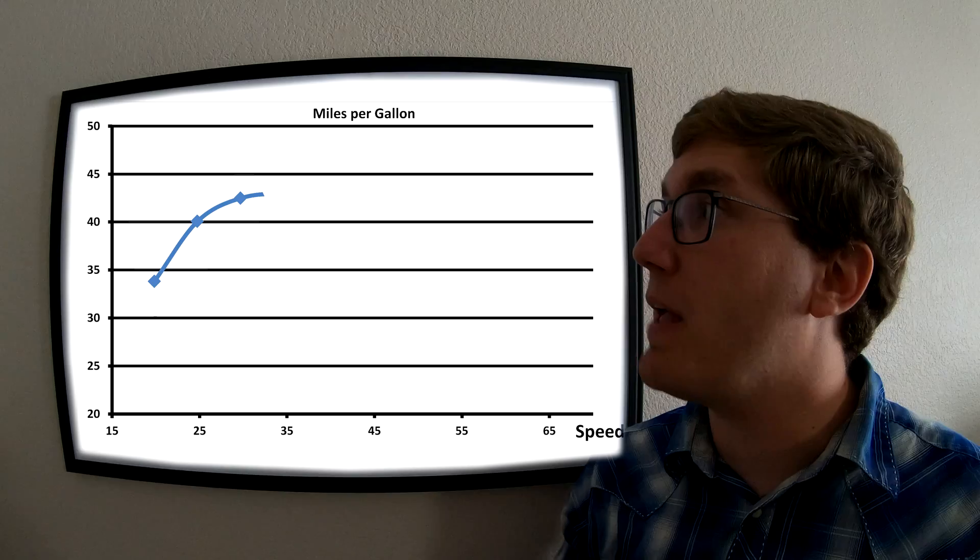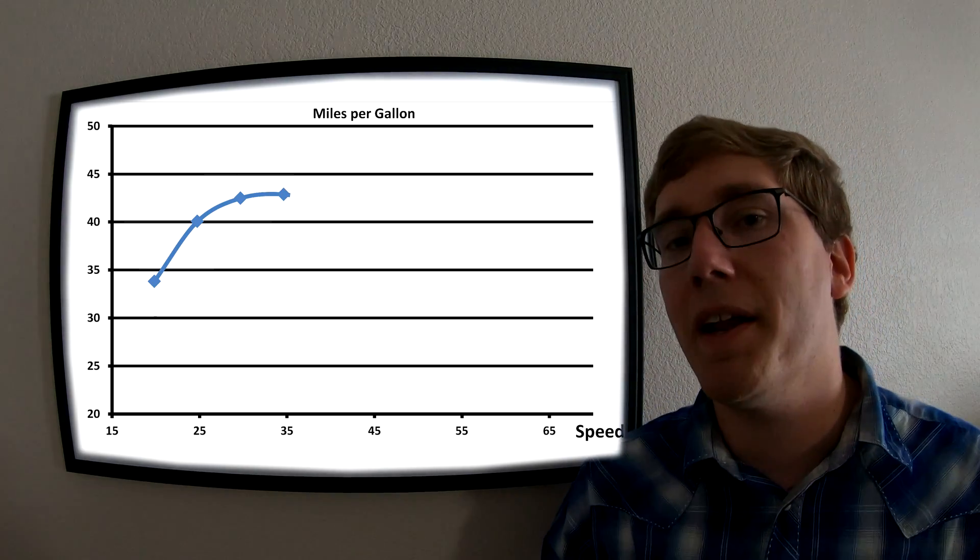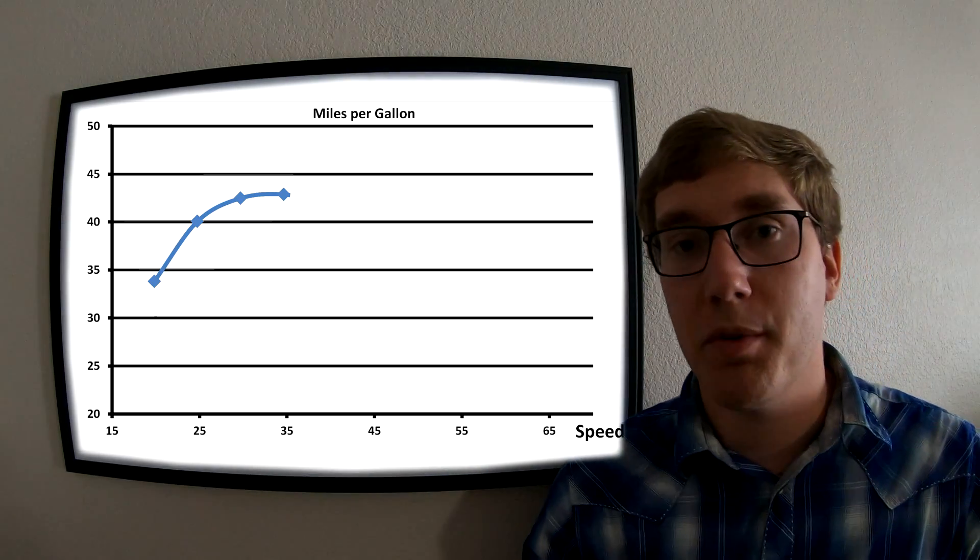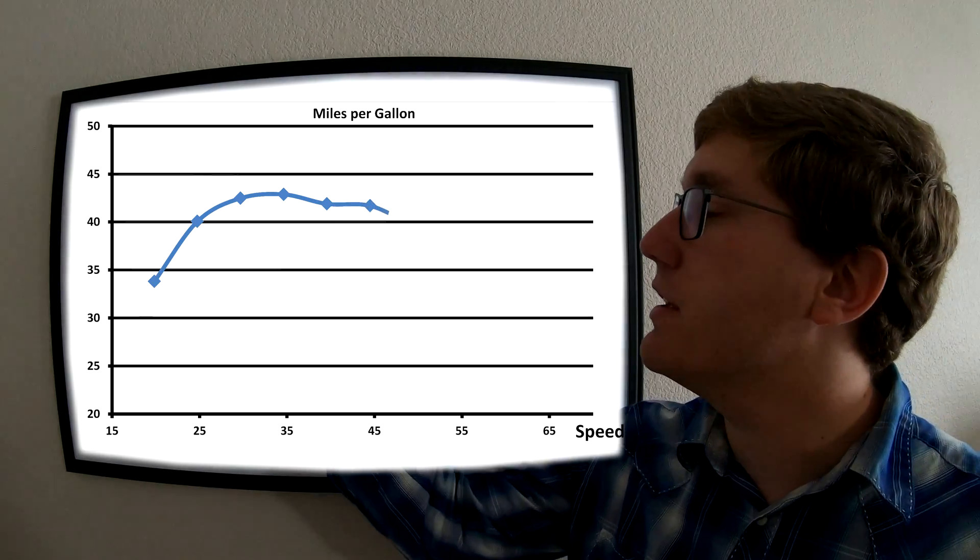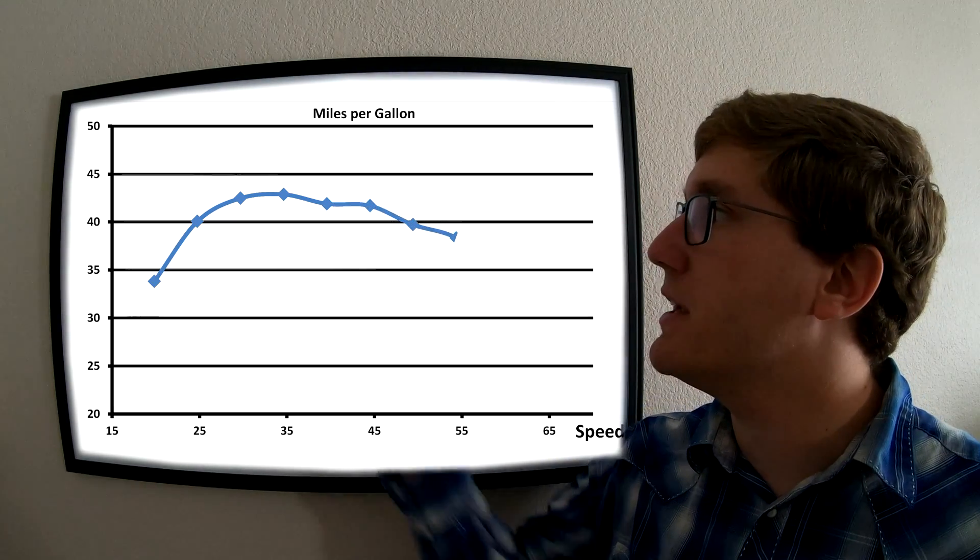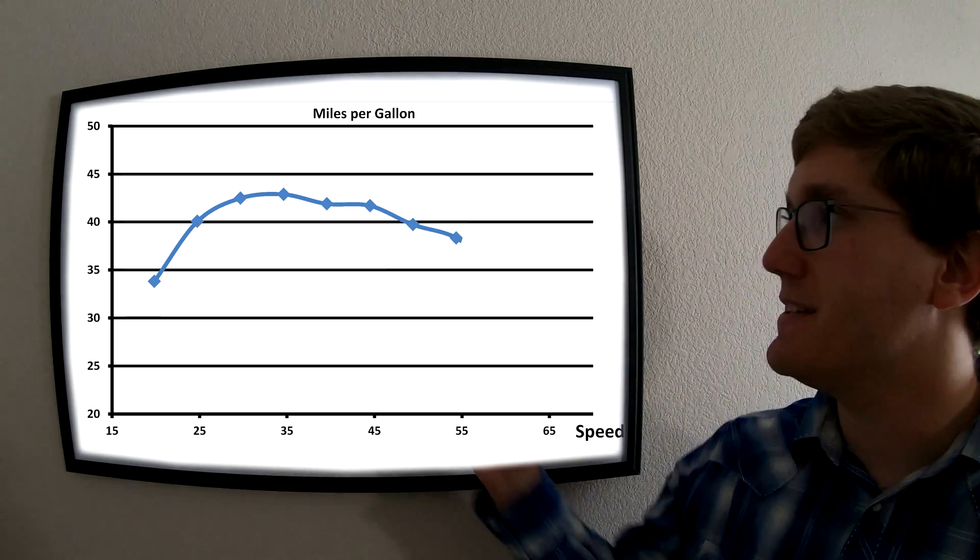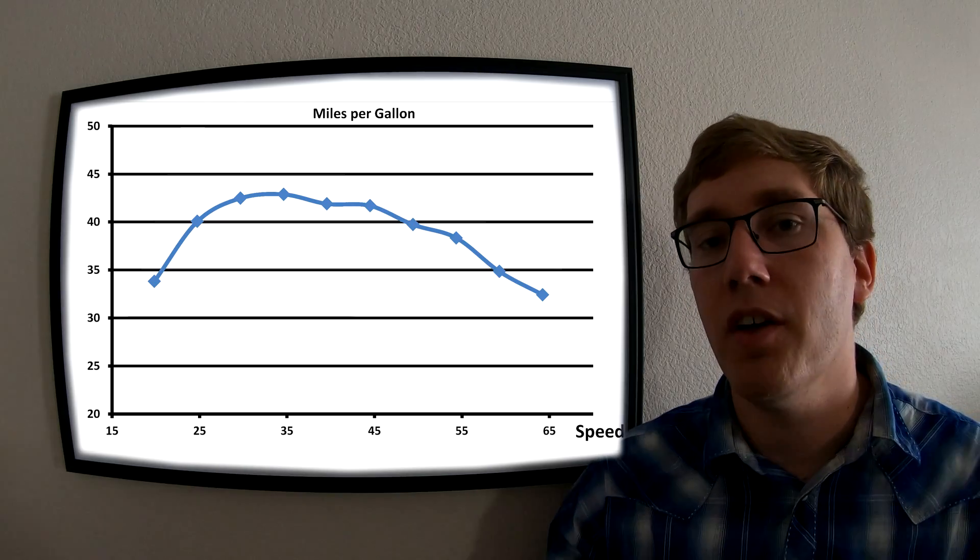It quickly ramps up and peaks at 35 miles per hour, getting 42.9 miles per gallon—the most efficient data point I took during this experiment. Then over the next few miles per hour, the MPG slowly begins to drop all the way down to about 50 miles per hour, at which point it takes a very sharp turn down and we begin losing MPG very quickly.